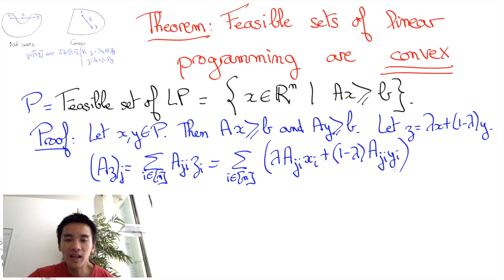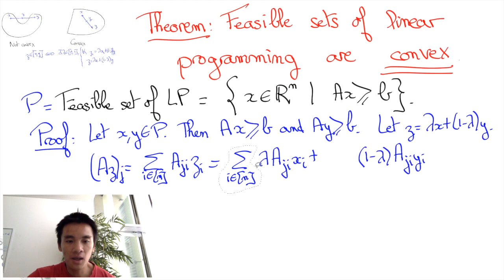Now we can separate the sum. We obtain two sums: the first is the sum for all i in N of lambda A_ji x_i plus the sum for all i in N of (1 minus lambda) A_ji y_i.